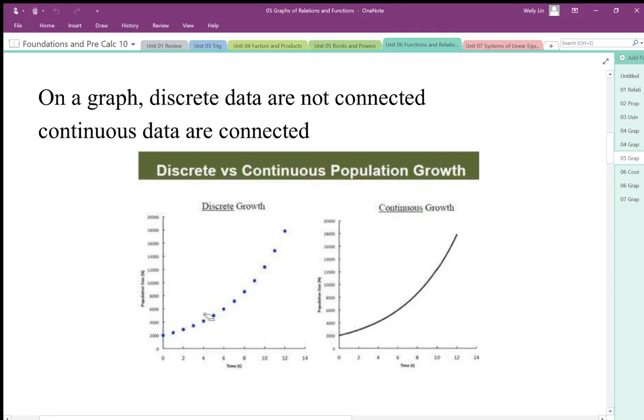If it's discrete, we leave them as discrete dots like this. And that's how we differentiate graphs with discrete variables versus graphs with continuous variables.